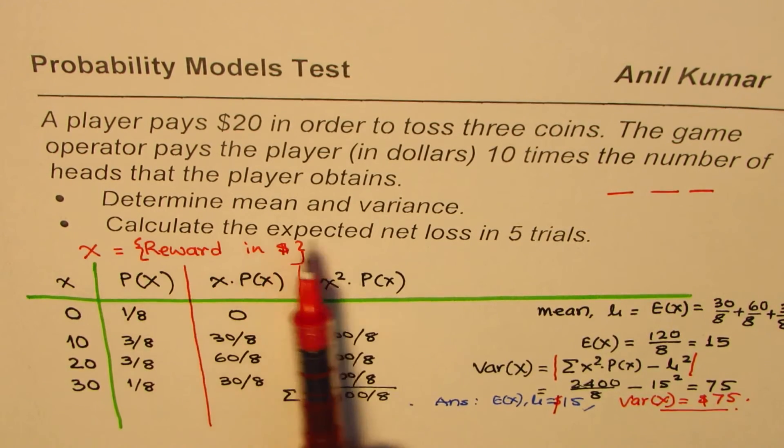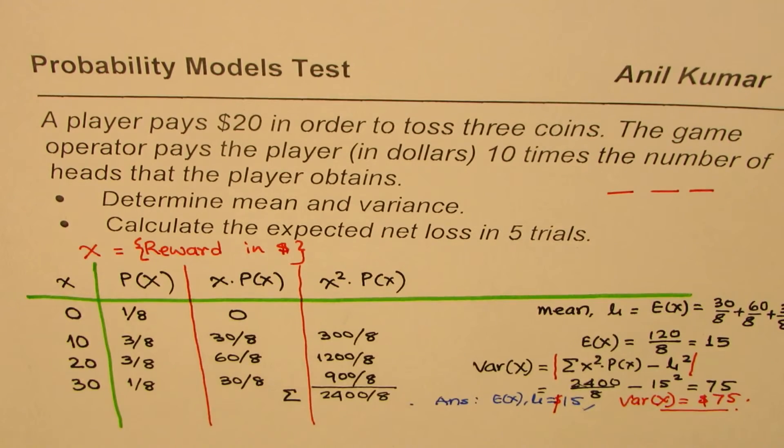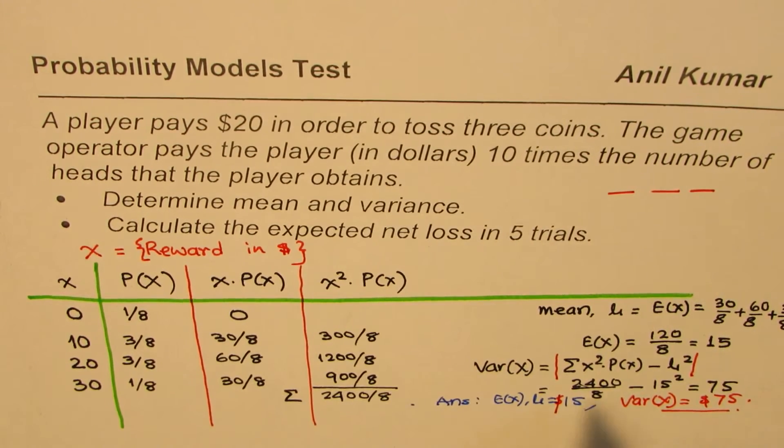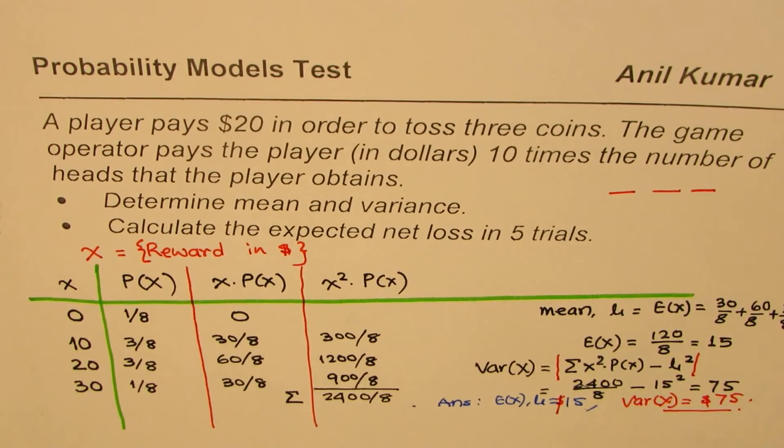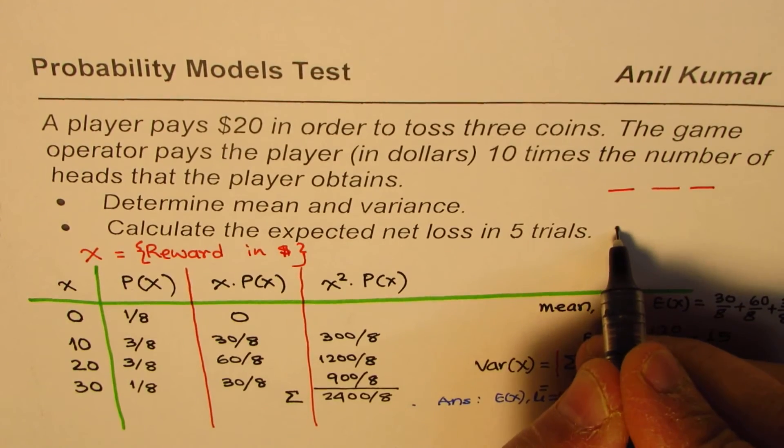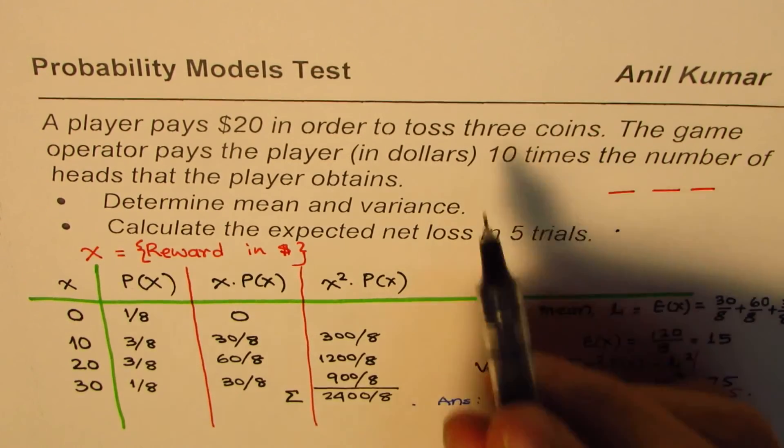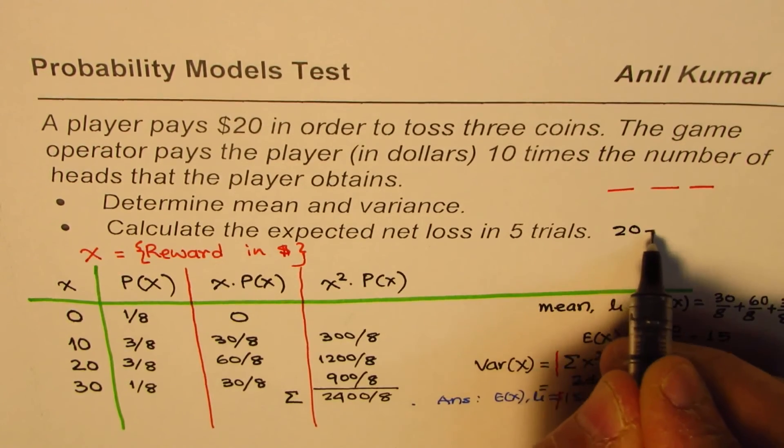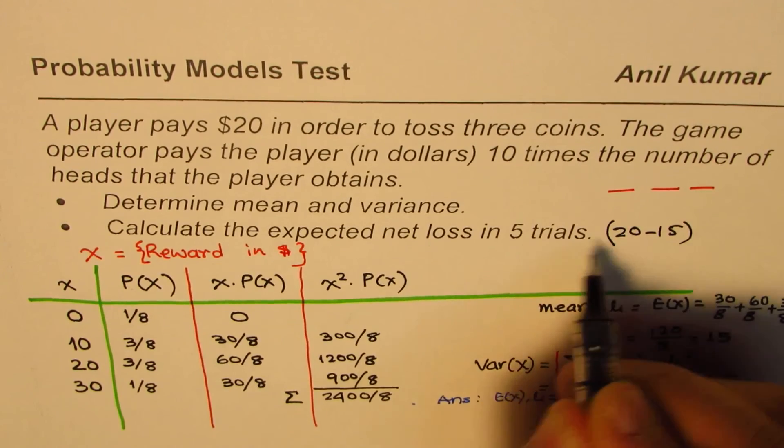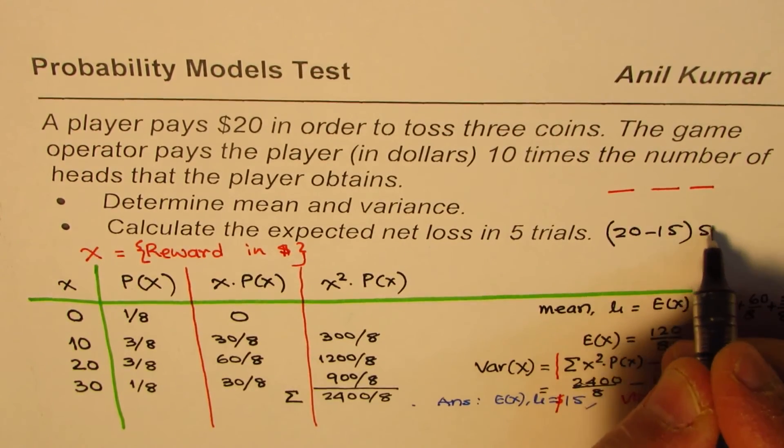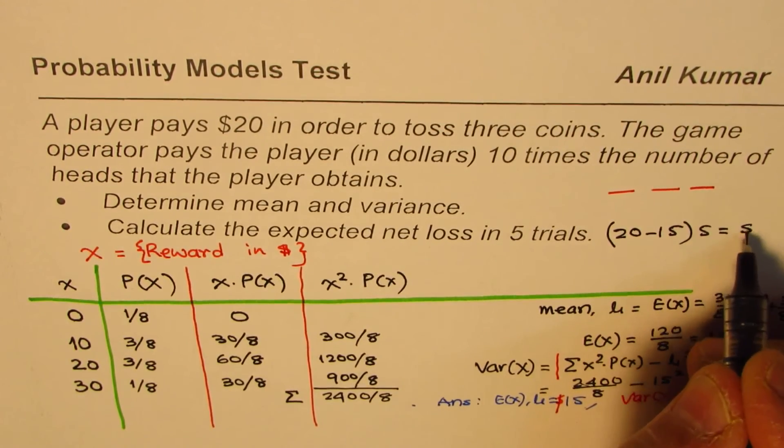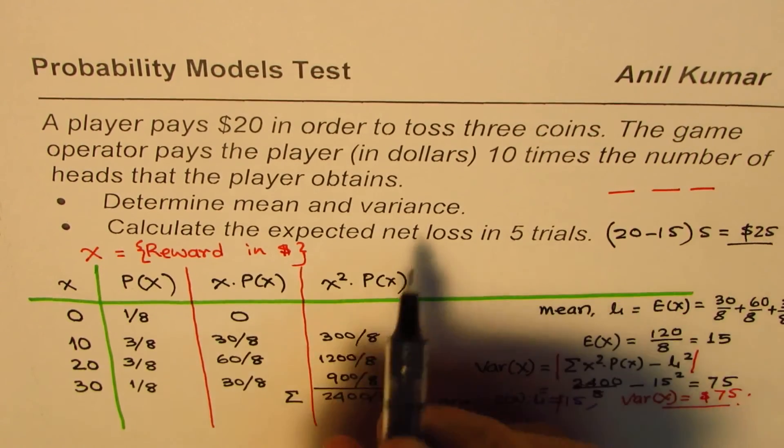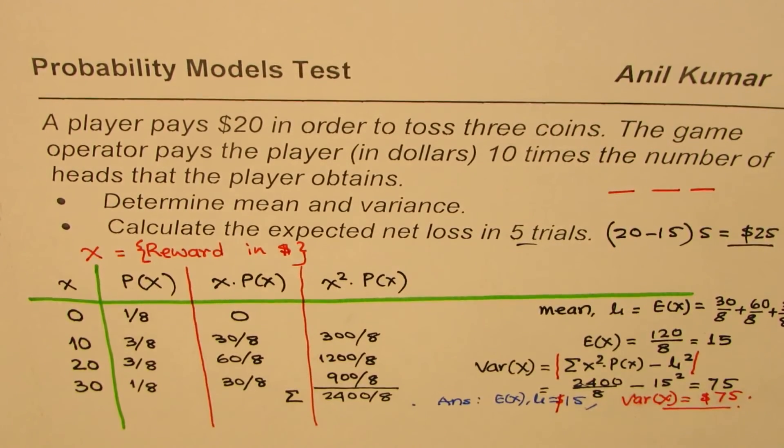Part B is calculate the expected net loss in five trials. So as we have seen, net loss is how much? Let's calculate this. You pay 20, but you gain 15. So there's a loss of $5. So it is 20 minus 15. And five trials, so multiply that by five. So it is $25, is the net loss in five trials.